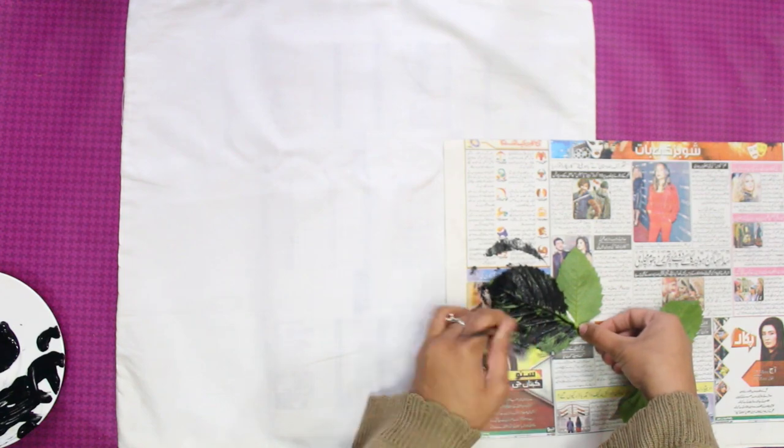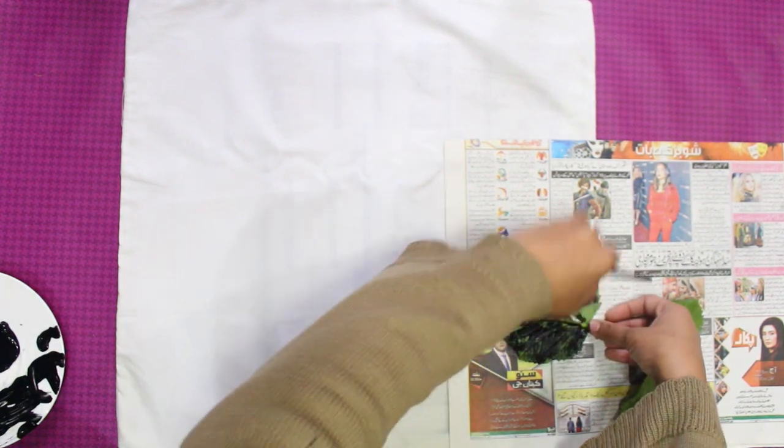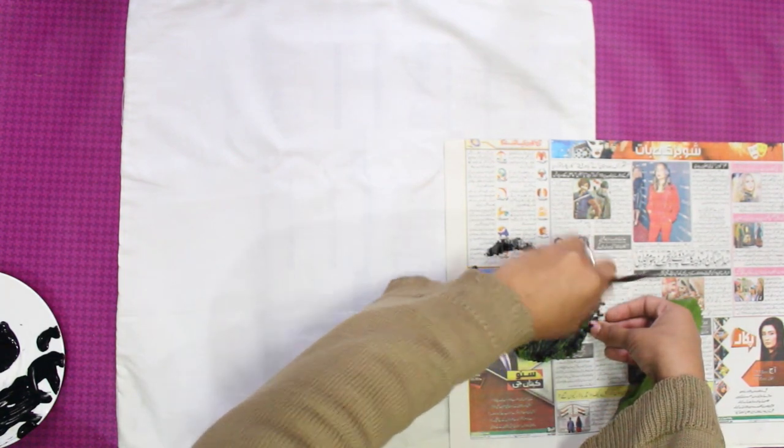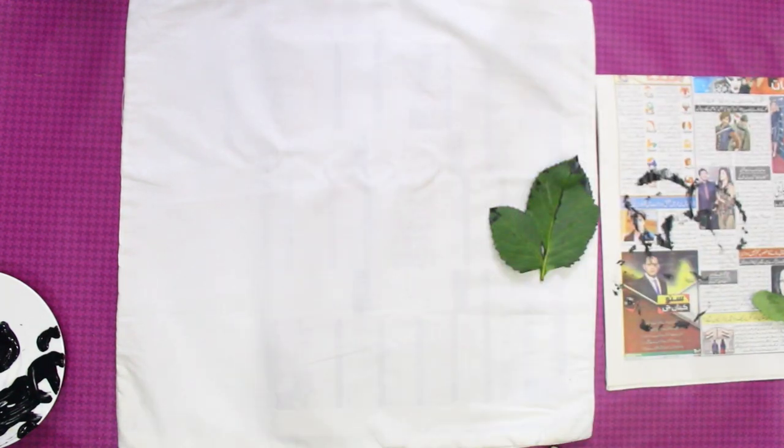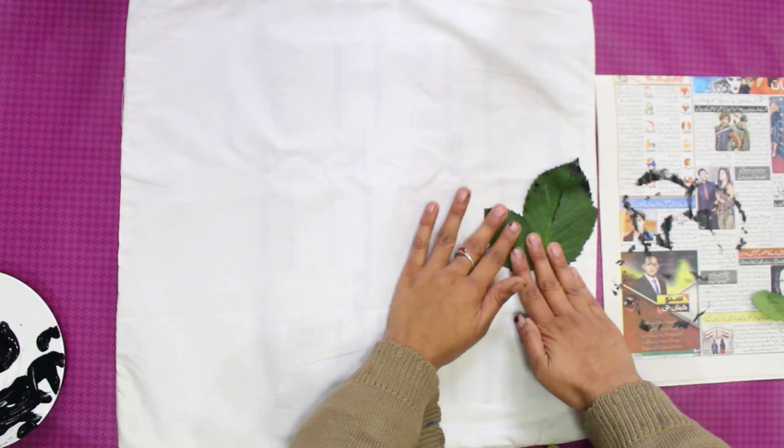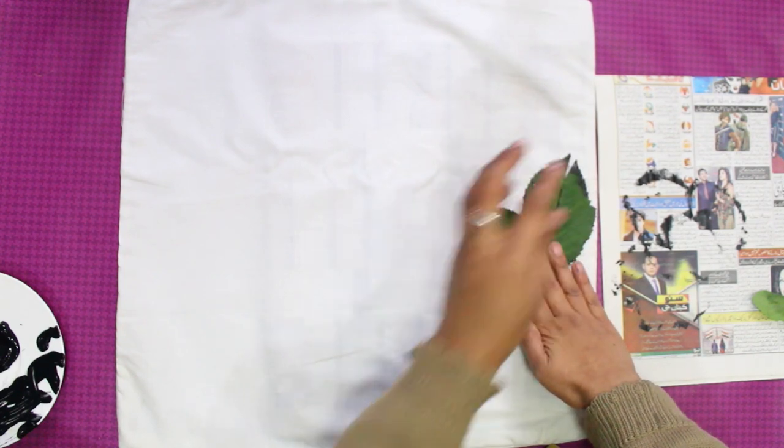With a brush, paint on the underside of the leaf. First, I try on newspaper then I stamp on the cushion.